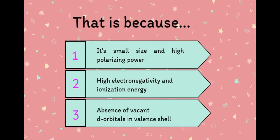That is because of its small size which results in concentration of charges in a small area, in turn increasing its polarizing power. Due to its small radius, it has high ionization energy and high electronegativity, hence forming covalent compounds.